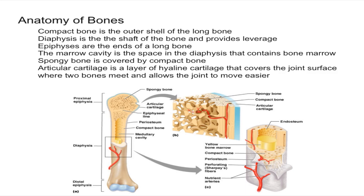Now let's talk about spongy bone. Spongy bone is always covered by compact bone. If you cut a bone in half, the middle looks kind of porous — there are a lot of holes, it kind of looks like a sponge. In long bones, spongy bone is found in the central spaces at the ends, essentially in the epiphysis. In other bones such as flat bones, spongy bone is found in the middle. One thing to remember is that most of the skeleton is compact bone, not spongy bone, and spongy bone is never left exposed.